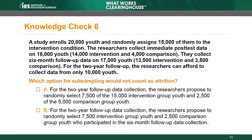Knowledge Check 6. A study enrolls 20,000 youth and randomly assigns 15,000 of them to the intervention condition. The researchers collect immediate post-test data on 18,000 youth — 14,000 intervention and 4,000 comparison. They collect 6-month follow-up data on 17,000 youth: 13,500 intervention and 3,500 comparison. For the 2-year follow-up, the researchers can afford to collect data from only 10,000 youth, half of the original sample. Which option for sub-sampling would not count as attrition?